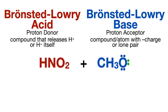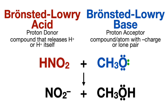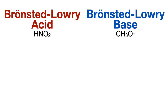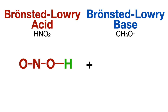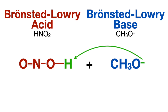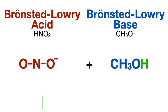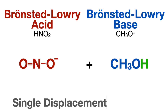When a Bronsted-Lowry acid reacts with a Bronsted-Lowry base, the proton from the acid is donated to the base, meaning the base accepts the proton, forming a bond with it. The Bronsted-Lowry acid has a proton attached to an oxygen, which is a bond that's easily broken, and the Bronsted-Lowry base has a negative charge — an extra lone pair — which is hugely attracted to the proton. So essentially what happens is the acid transfers a proton to the base. This occurs via single displacement reactions.